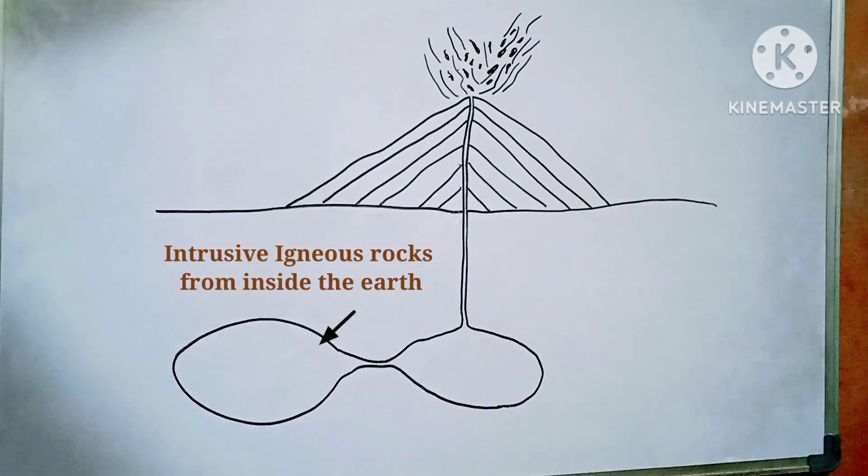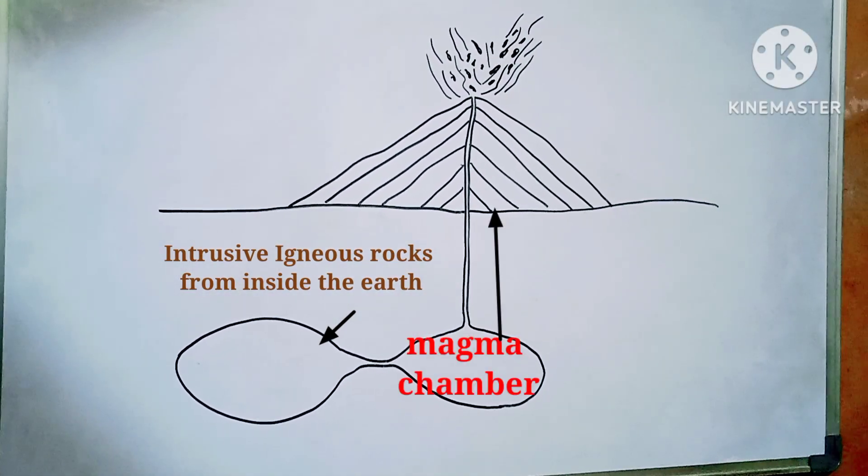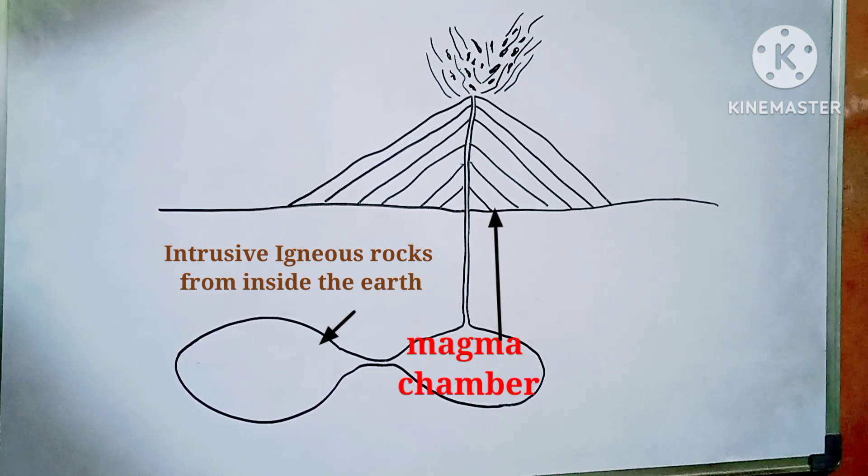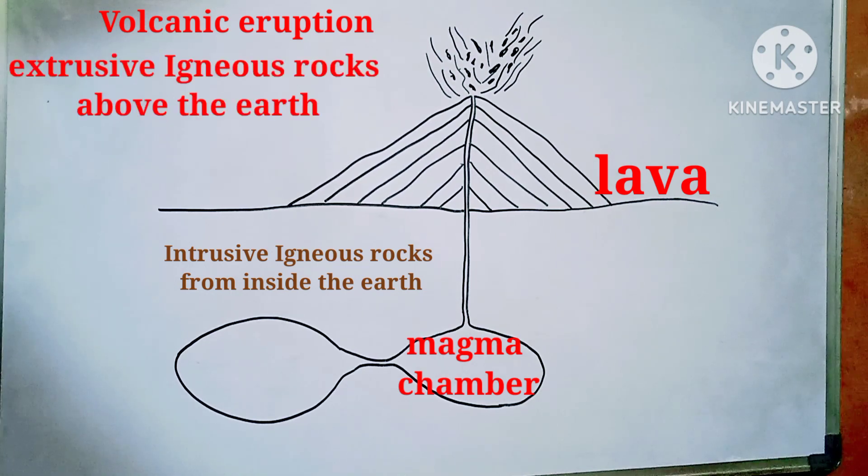The other type is when slowly rising magma gushes out of the earth during volcanic eruption as lava. As lava cools down faster, it forms igneous rocks with different properties. These formed above the surface of the earth are called extrusive igneous rocks.